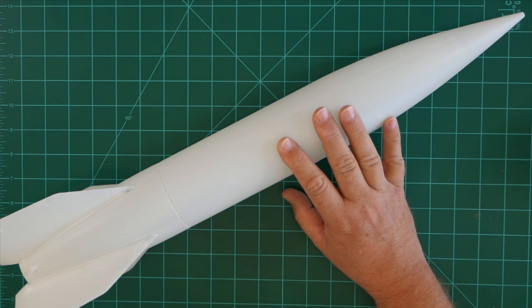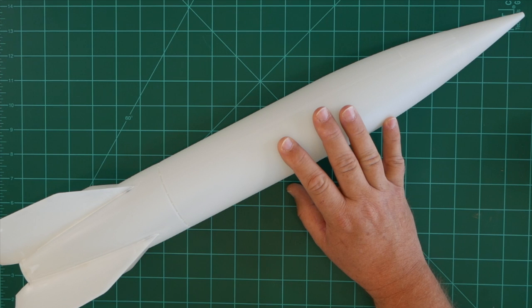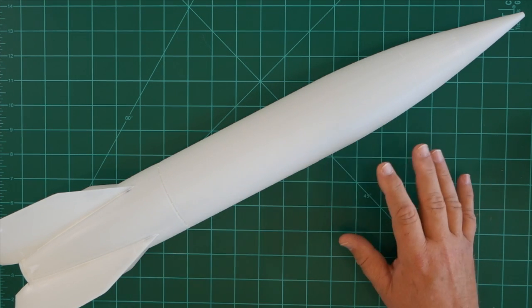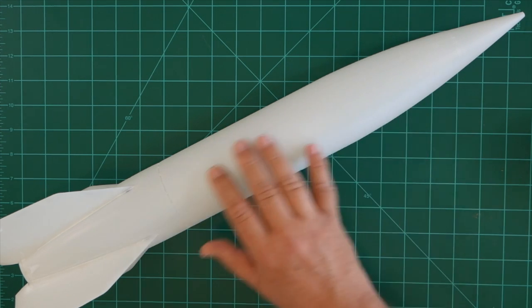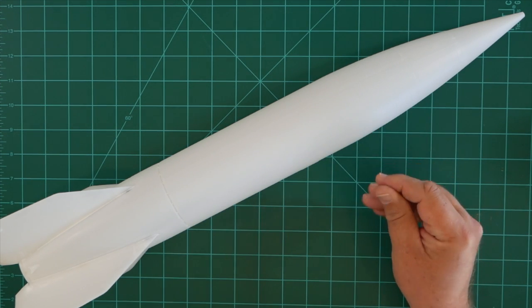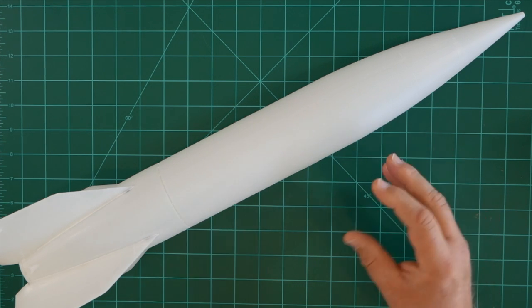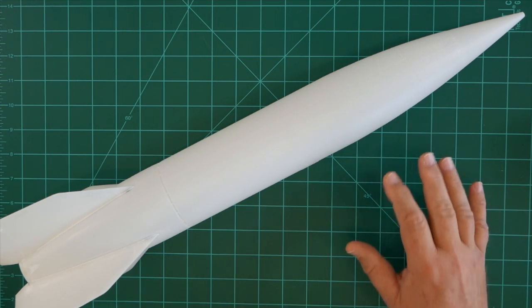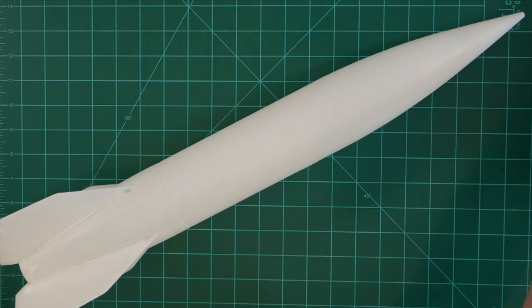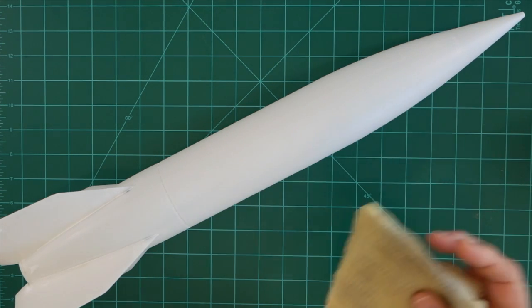I've already washed the model in the sink using lukewarm water and mild dishwashing detergent. The stuff you have sitting next to the kitchen sink right now is just fine for this task. This will remove any sanding dust, mold release, or skin oil that has managed to affix itself to our model during the build process. Next we'll allow the model to completely dry over the course of a few hours.